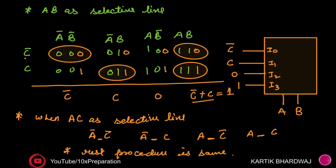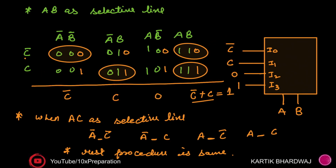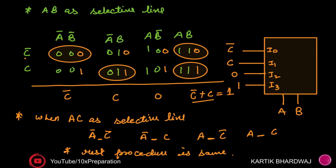Note that it is not necessary to always use an inverter. For example, if the function were Σ(1,3,6,7), then C̄ would not be needed at all, so no inverter is required in that case. However, if you do have one inverter available, you can potentially reduce the size of the MUX by one variable.